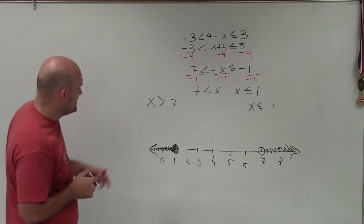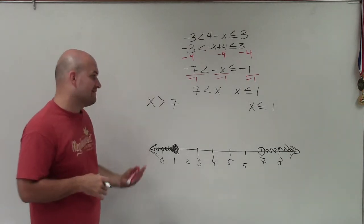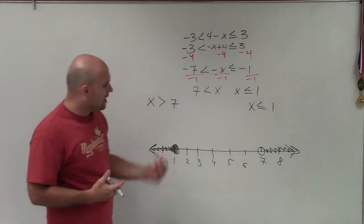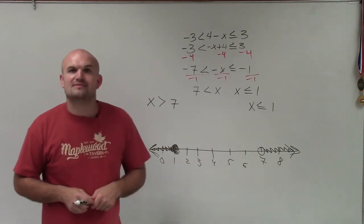So therefore, ladies and gentlemen, there you can see is I have x > 7, as well as x ≤ 1. They do not intersect. Those are going to be your two OR statements. Thanks.